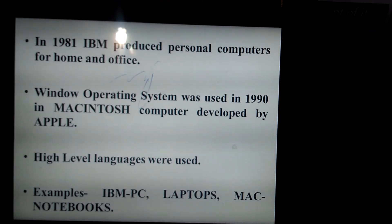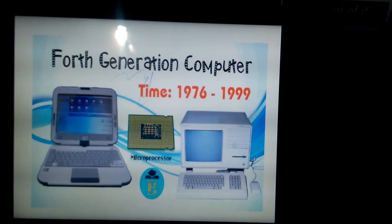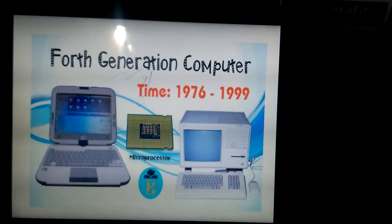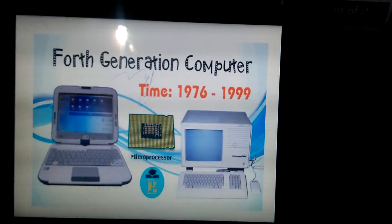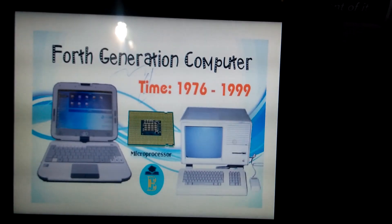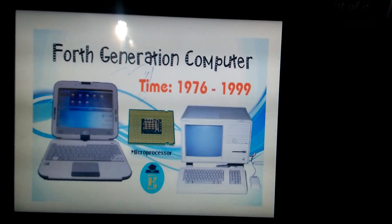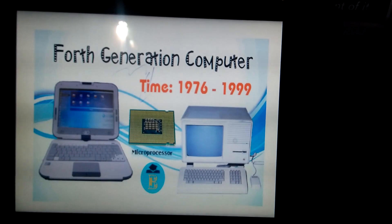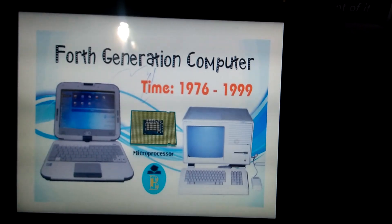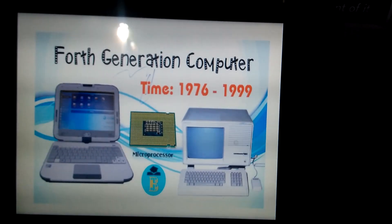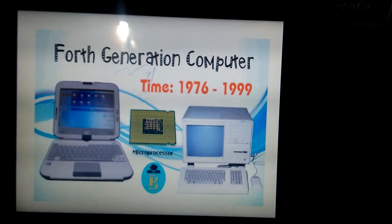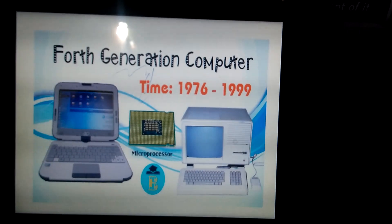Examples of fourth generation computers include IBM PCs, laptops, Macs, and notebooks. You can see in the picture: on the left is a laptop, in the middle is a microprocessor, and on the right is a desktop. Computers became so affordable that prices gradually decreased from the first to fourth generation, making them available in every home.